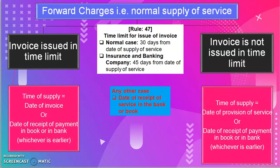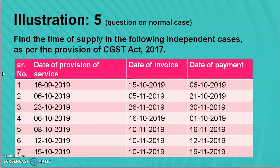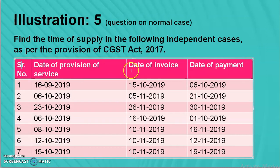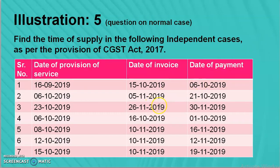Now let's solve Illustration 5, which is completely based on forward charges. The illustration reads: find the time of supply in the following independent cases as per the provisions of CGST Act 2017. There are seven serial number points given. For each case you have the date of provision of service, the date of invoice, and the date of payment. We will analyze each point one by one.